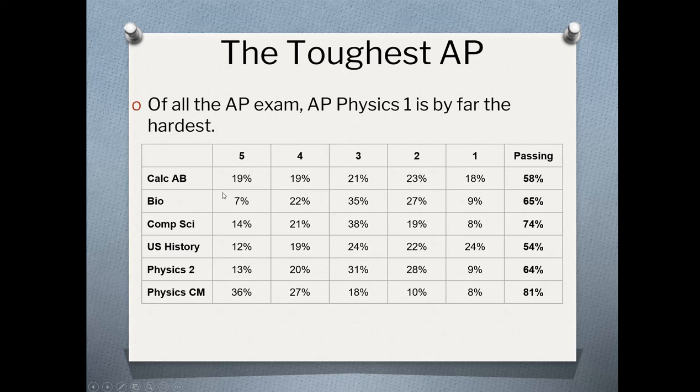But most of them tend to be mid 10 to 20 range. Bio is a little low, but if you look at its percentage of 4 and 3, it ends up balancing out. Over here, the number of people getting above a 3, you can see is, for the most part, definitely greater than 50 and typically is going to be around 70%. And this is true for most of the APs.